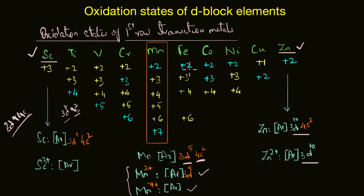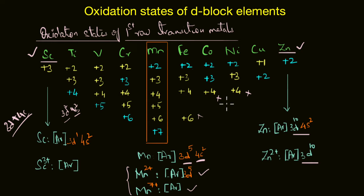From iron to zinc, we notice a decrease in the stability of the higher oxidation states. In iron, the most stable state is +2 and not +6. Similarly, in cobalt and nickel, the most stable state is again +2 and not the highest oxidation state of +4. This decreasing stability of higher oxidation states is due to the unavailability of d orbitals — or, in other words, the presence of too many d electrons — which is why lower oxidation states are favored in elements ranging from iron to zinc.